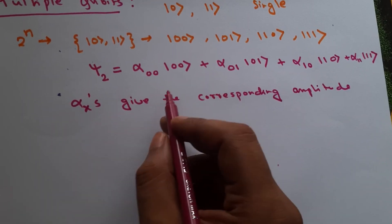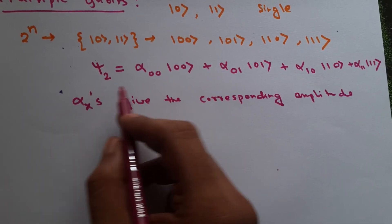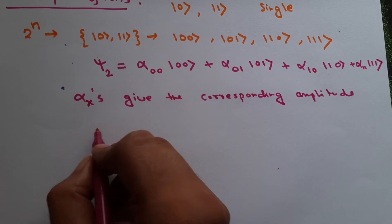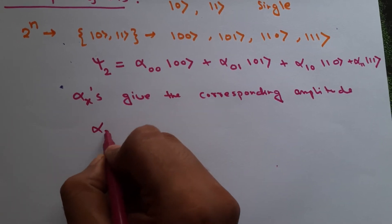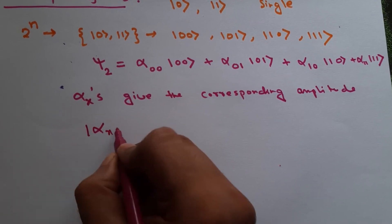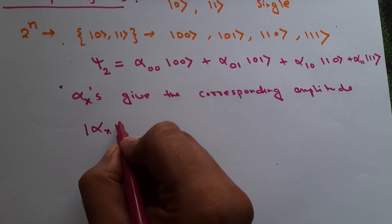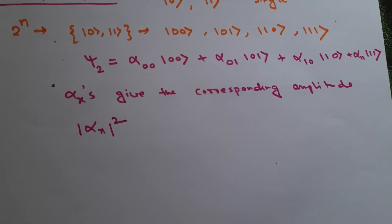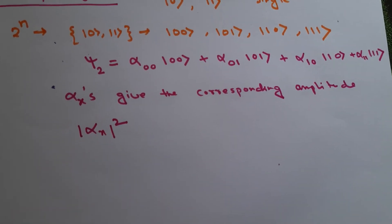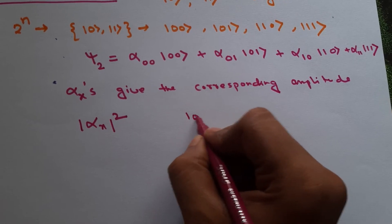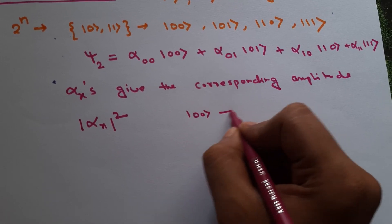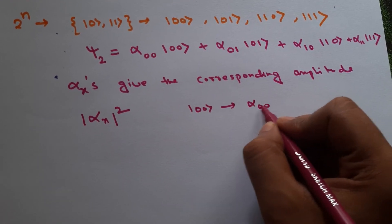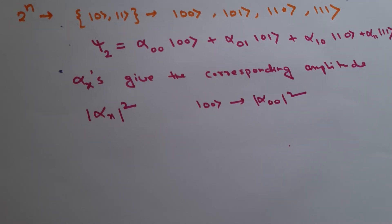If we measure and the state collapses to a certain state, that state will have a probability equal to |alpha_X|². For example, if it collapses to |00⟩, the probability will be |alpha_00|².